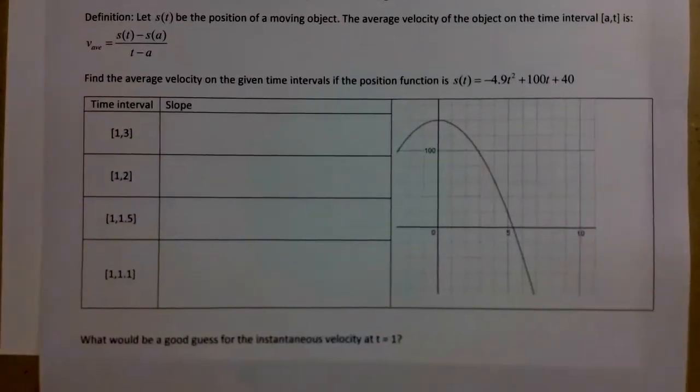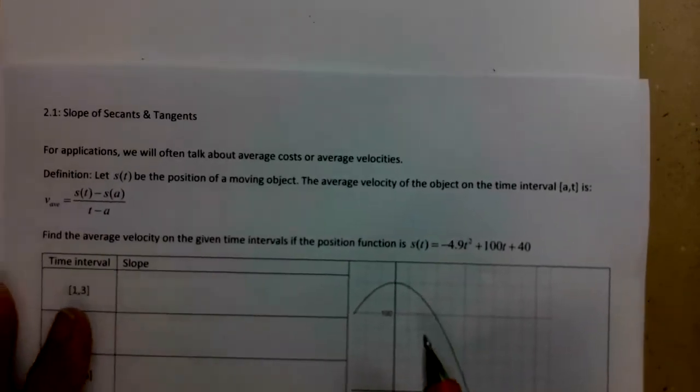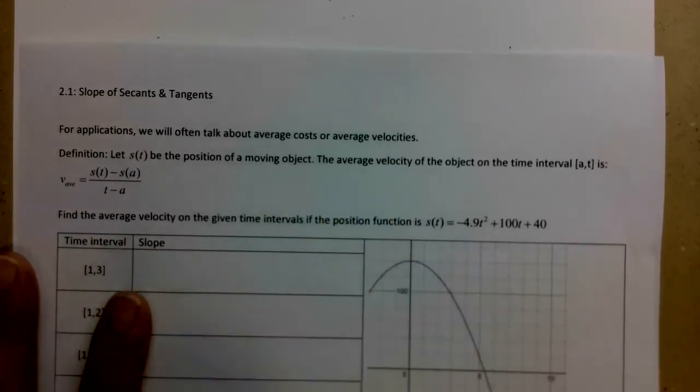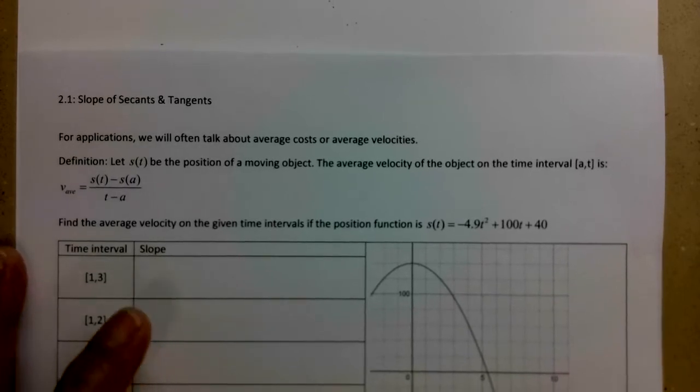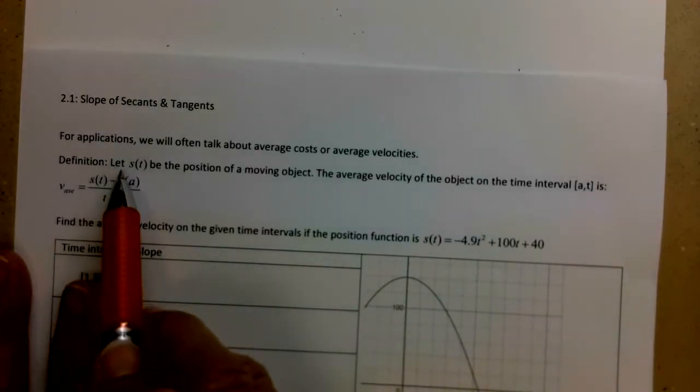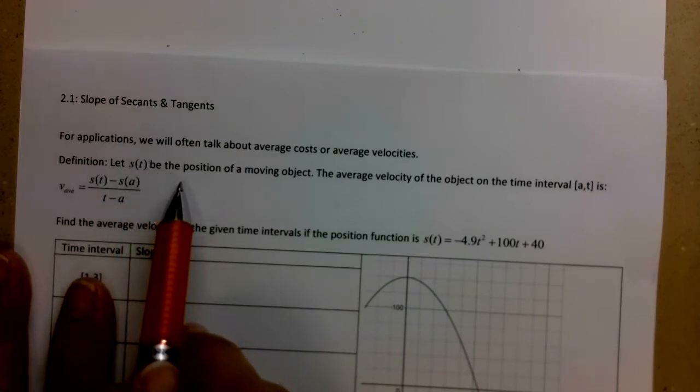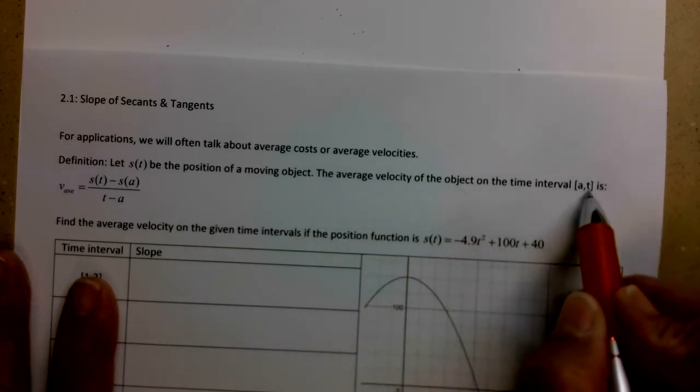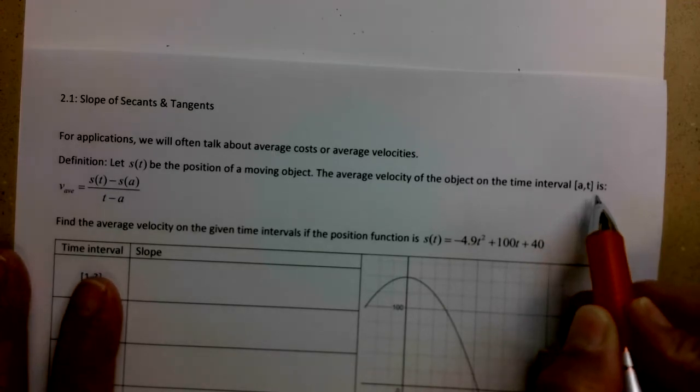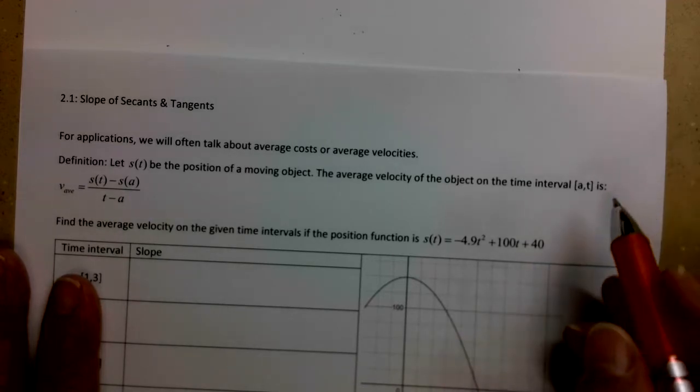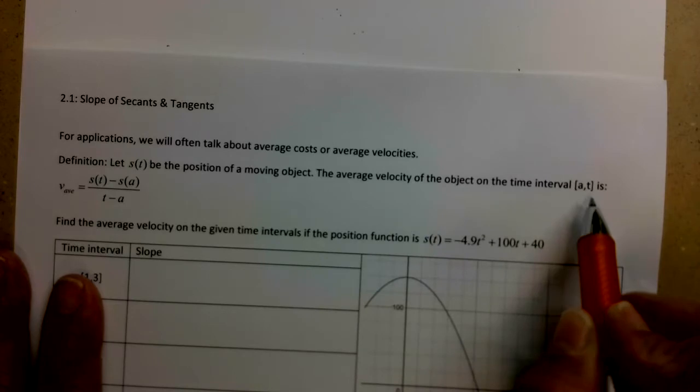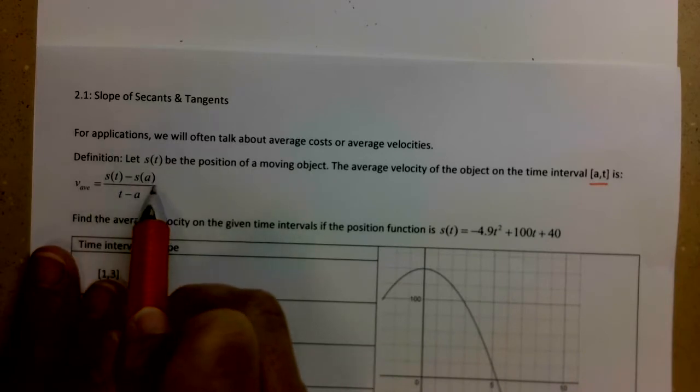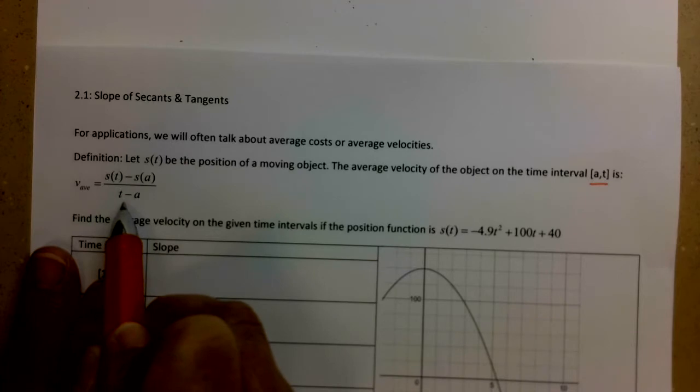So how does this work for applications? Well, for applications, a lot of the time when we talk about average rates of change, we'll talk about average costs, or we'll talk about average velocities. And so we're going to go ahead and do velocities as our example today. So first of all, a definition. So let S(T) be the position of a moving object. The average velocity of the object on the time interval, starting at A and going to T, right? So T is being our independent variable now because we're talking about position with respect to time. So we're going to talk about the average velocity of the object over this time interval.